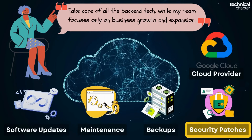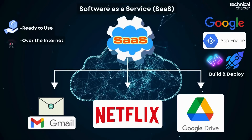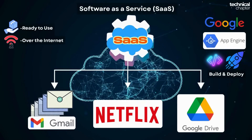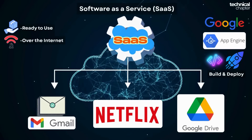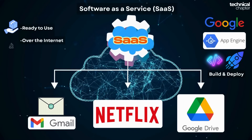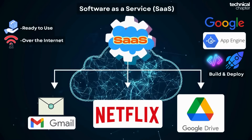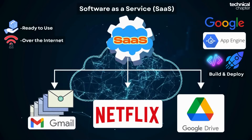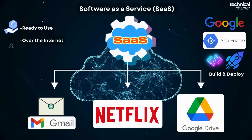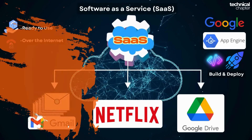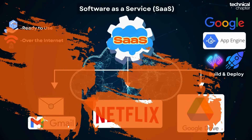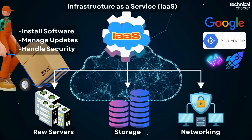Why isn't this SaaS? SaaS means you don't build anything yourself — you just use a ready-made app like Gmail or Netflix. With Google App Engine, you are building and deploying your own application. Google provides the platform, but the app itself is yours — you control the logic, the features, the database, everything inside your app. So it's not SaaS, because you're not just using a finished application; you are creating and managing one.